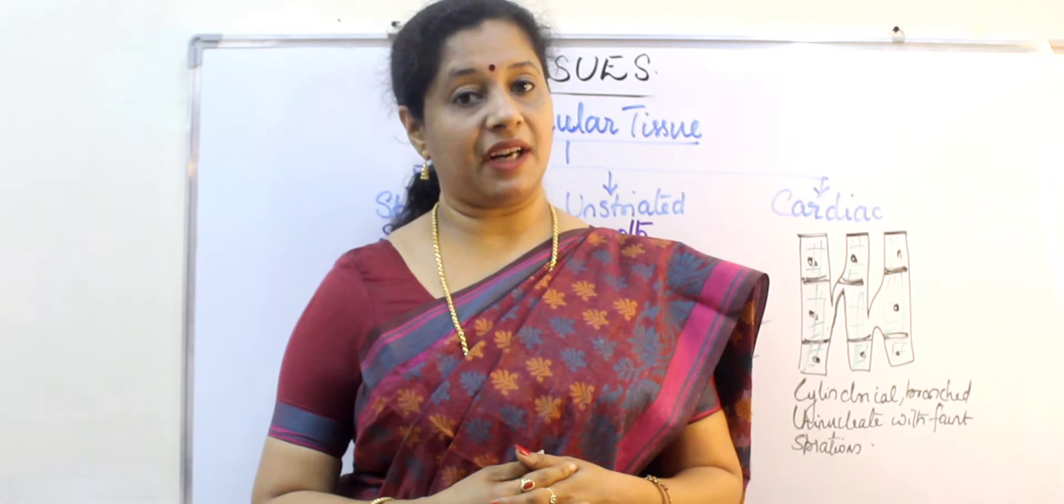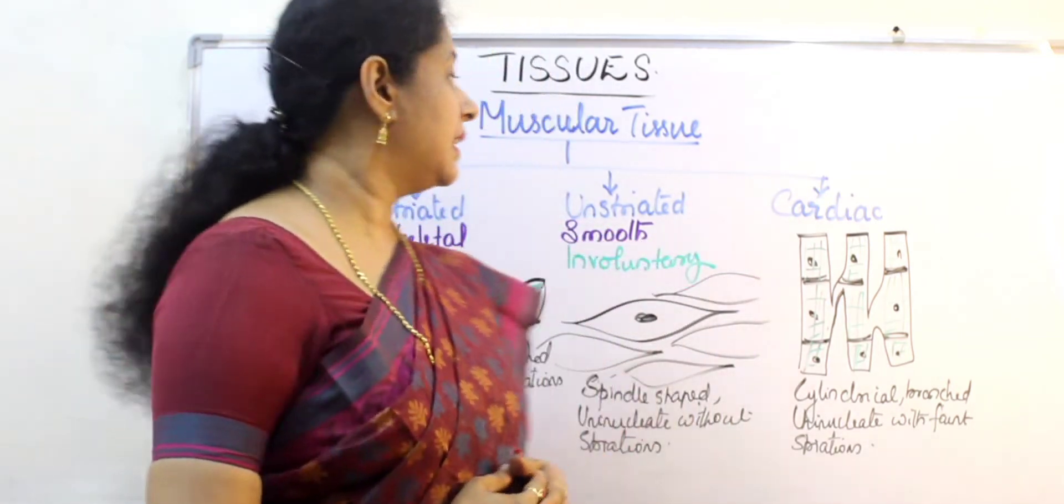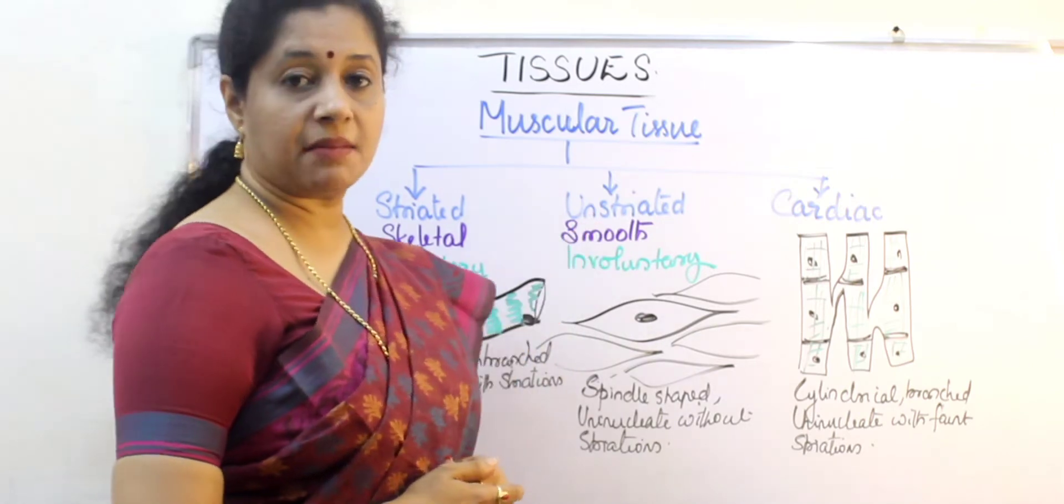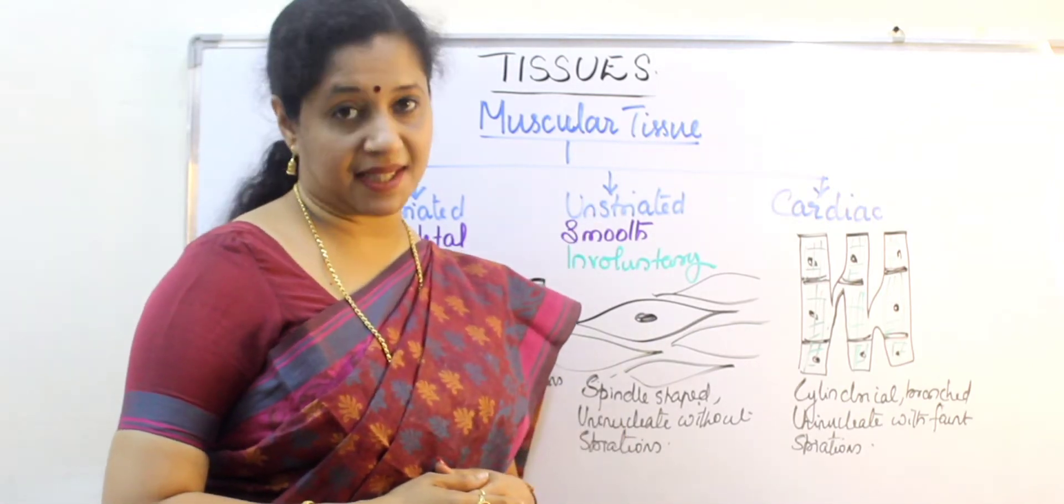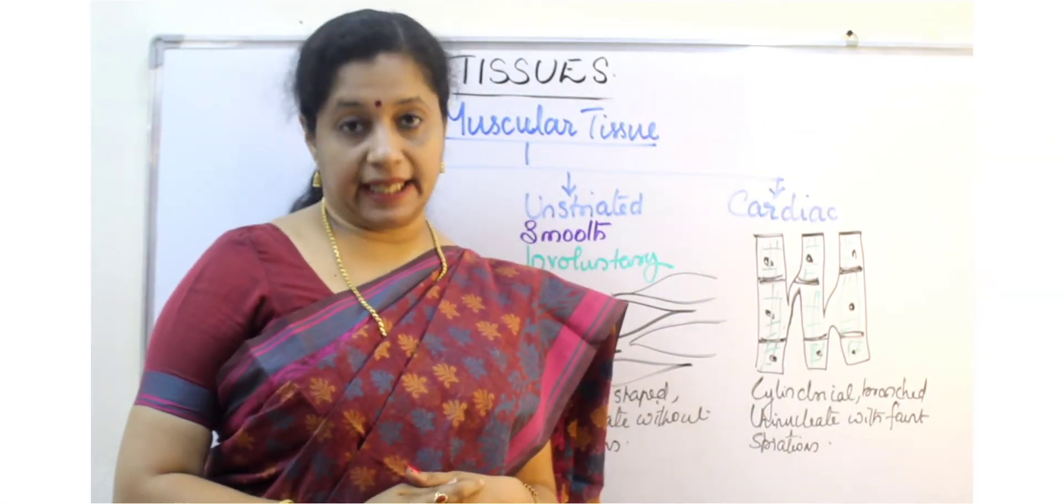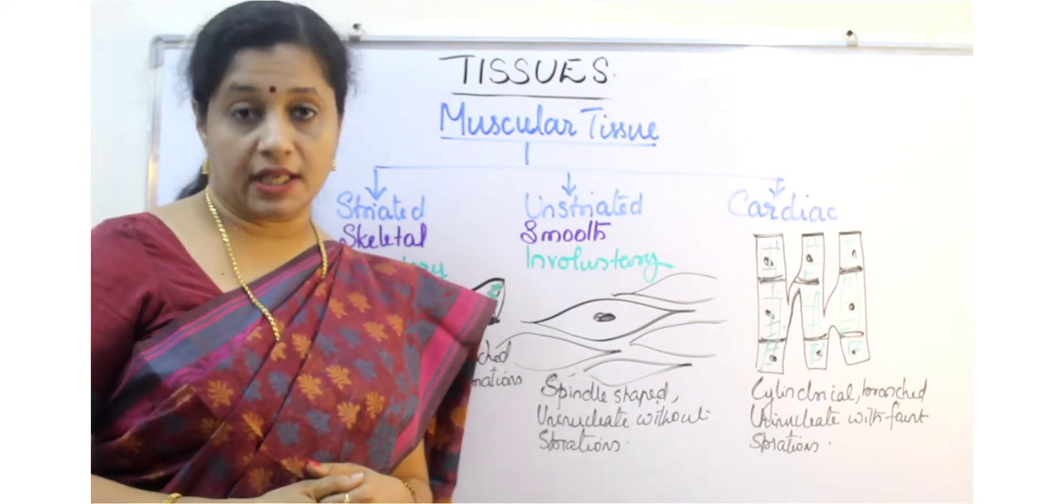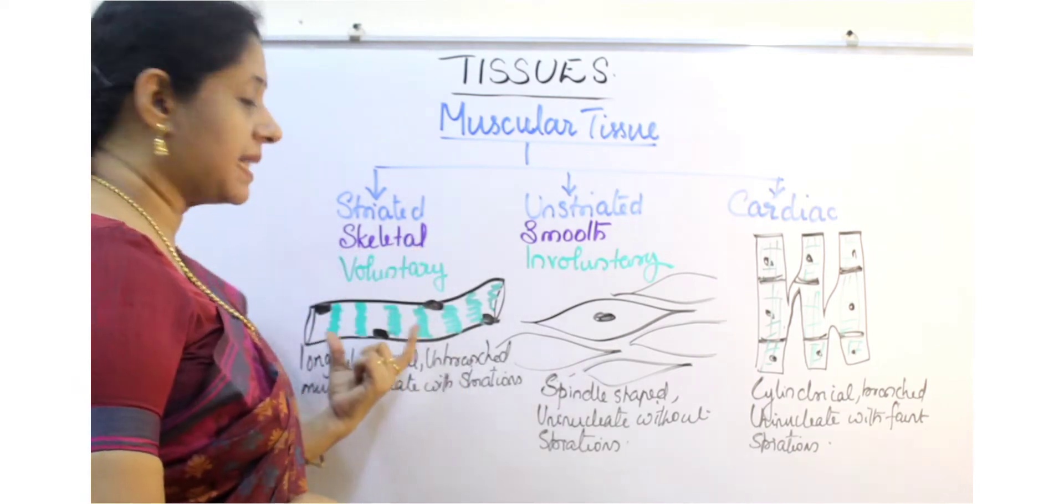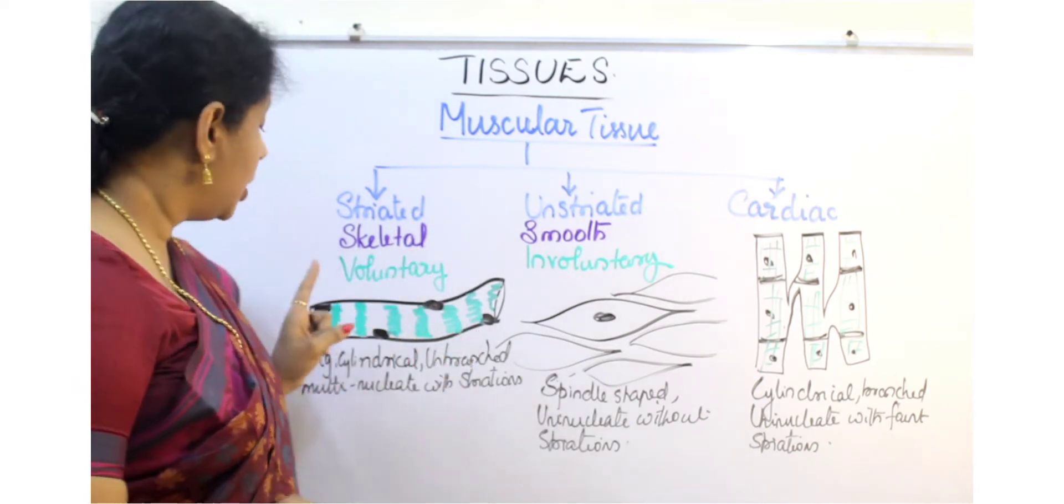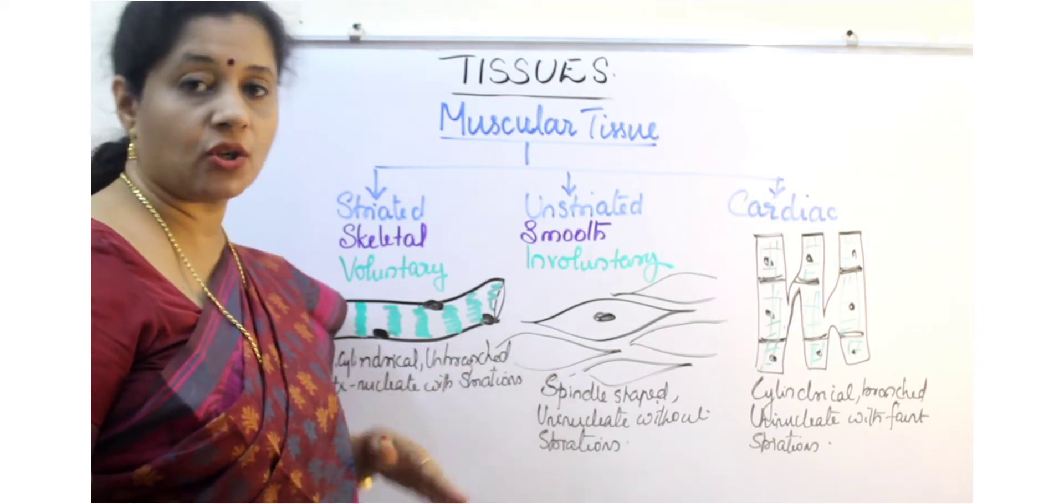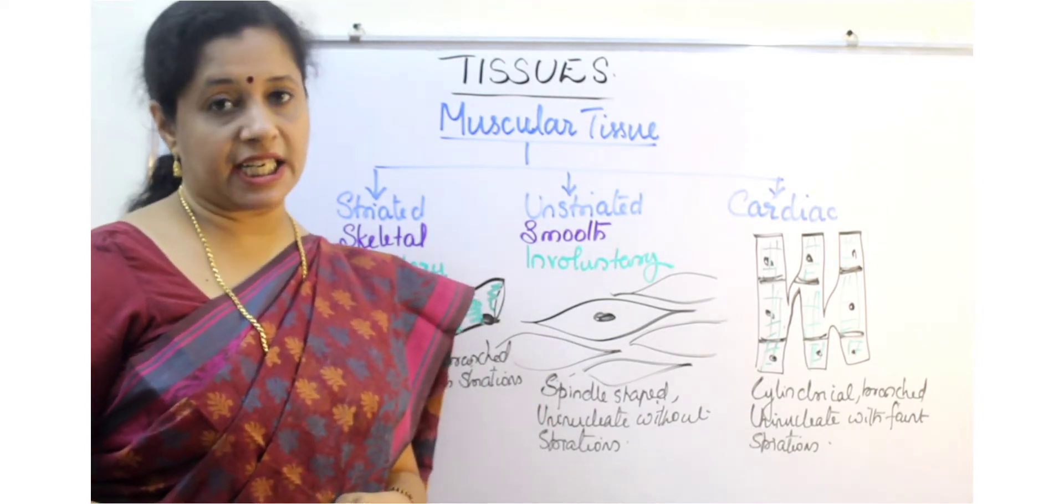Muscles can be classified into three categories. The first is called striated muscle, second unstriated muscle, and third cardiac muscle. Striated muscle gets its name because striation means lines or stripes. When you look at these muscle fibers under the microscope, you will find light and dark striations or bands on them. That's why they are called striated muscles.